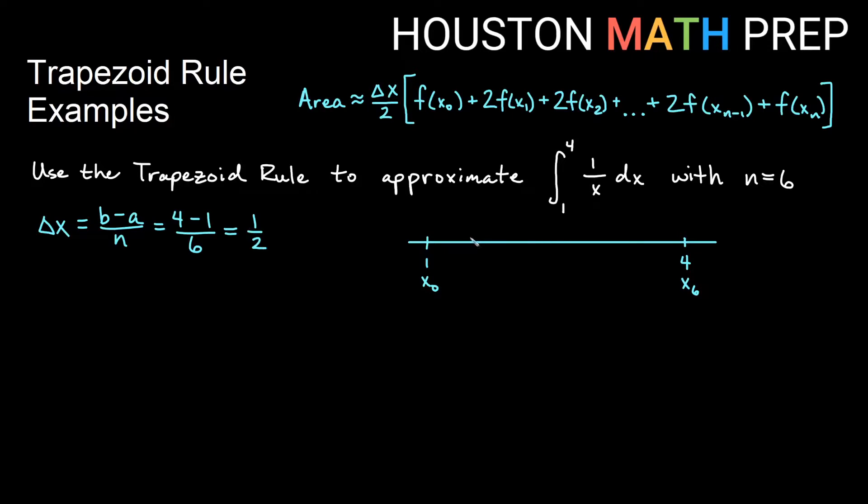So if I think about going up by a half, that would put me at 1 and a half or 3 halves. That's my x₁. If I go up another half, that would be 2. That'll be my x₂. If I go up another half, that will be 2 and a half or 5 halves, which is x₃.